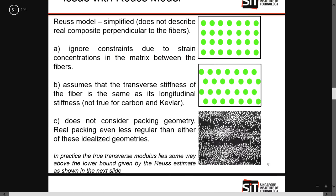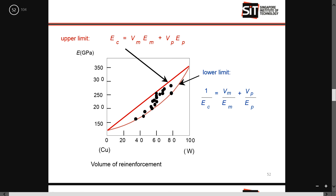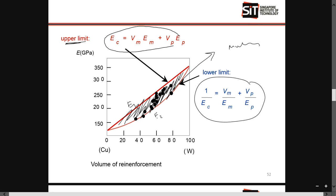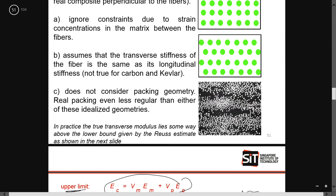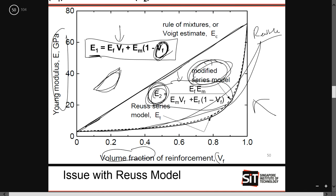The upper limit is E1 and the lower limit is E2, so your Young's modulus will fall within this region. This region is probably already your modified series model. You want to ensure that your composite Young's modulus falls within this region and should be safe. The lower limit equation and the upper limit equation are both important to know.